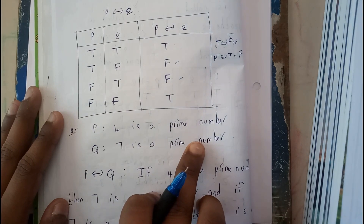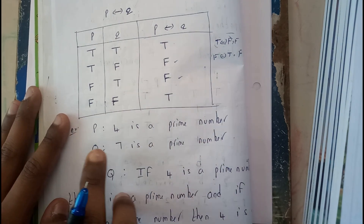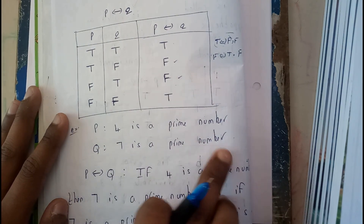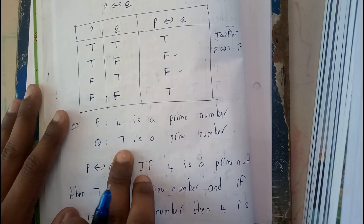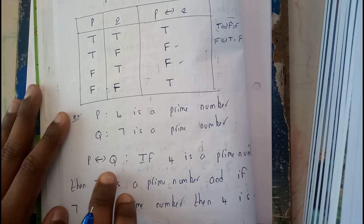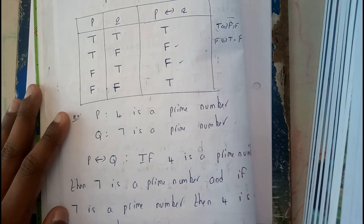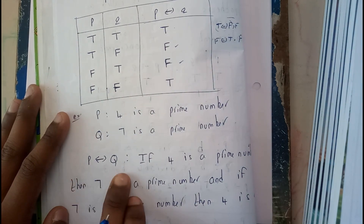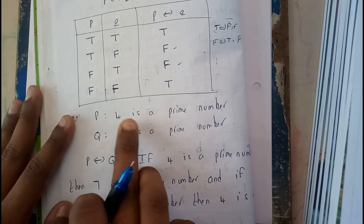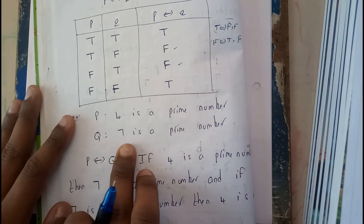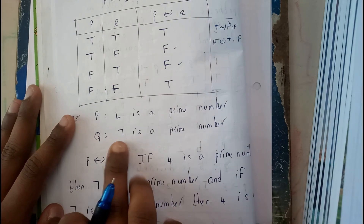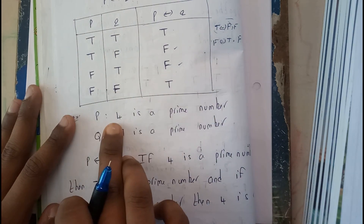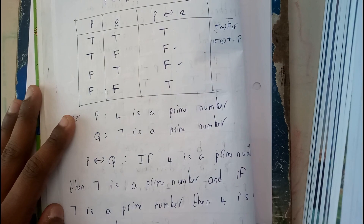Let us go through this statement: p — '4 is a prime number'; q — '7 is a prime number'. So p is false and q is true. In terms of the biconditional statement, you write: p double implies q — 'if 4 is a prime number then 7 is a prime number, and if 7 is a prime number then 4 is a prime number.' So you write two statements.